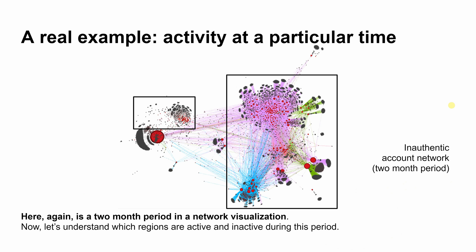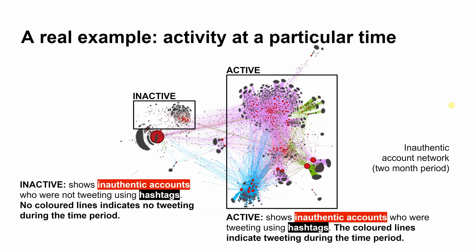A real example — activity at a particular time. Here again is a two month period in a network visualization. Now let's understand which regions are active and inactive during this period. Inactive shows inauthentic accounts who were not tweeting using hashtags during this time period — no colored lines indicates no tweeting. Active shows inauthentic accounts who were tweeting using hashtags during this time period — the colored lines indicate tweeting during the time period.